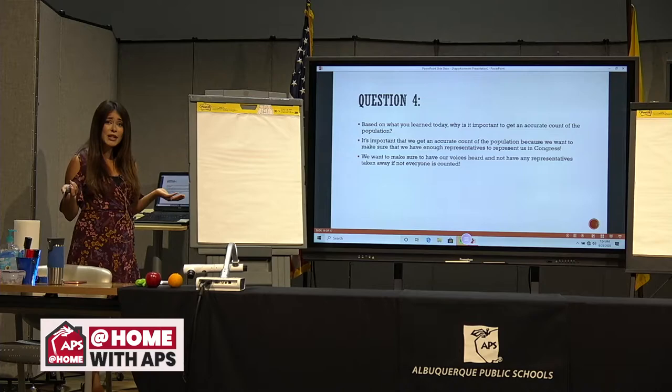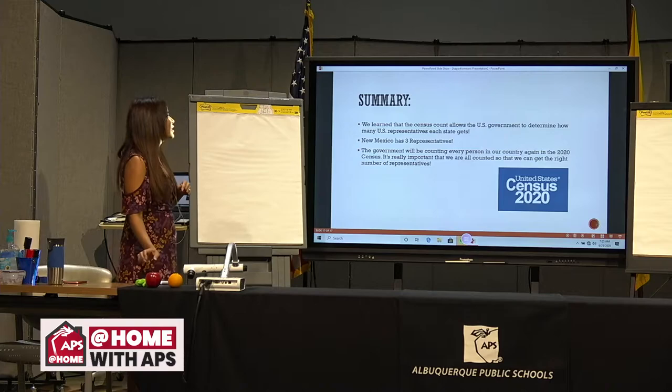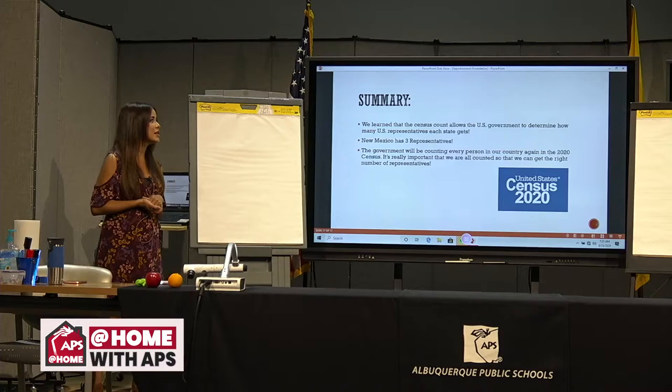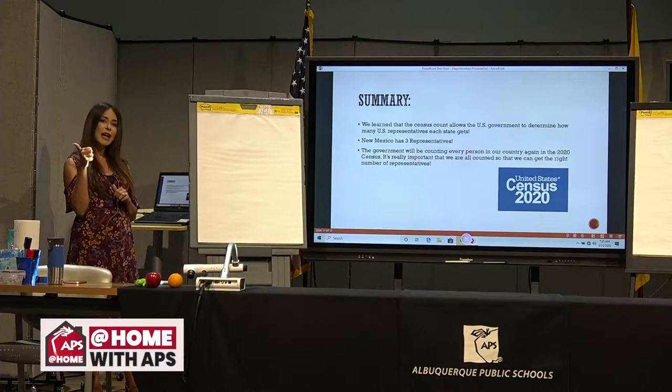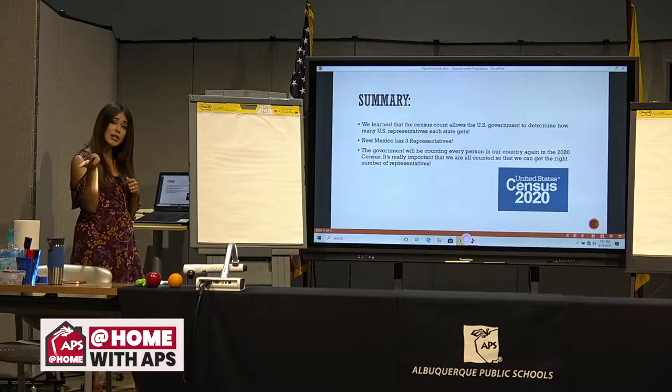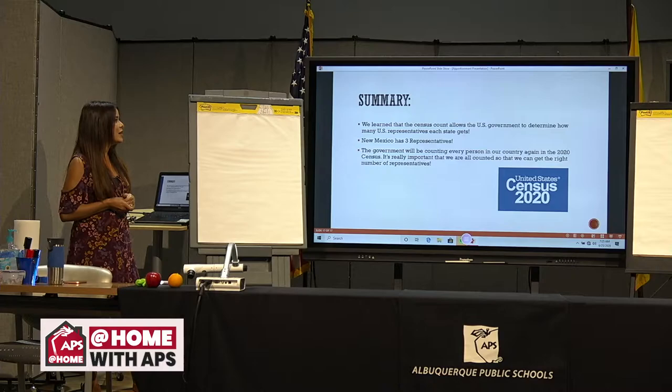In conclusion, we learned that the census count allows the U.S. government to determine how many U.S. representatives each state gets. New Mexico has three representatives: Xochitl Torres-Small, elected in 2018; Deb Haaland, also elected in 2018; and Ben Ray Lujan, elected in 2008. The government will be counting every person in our country again in the 2020 census — it's really important that we are all counted so we can get the right number of representatives.